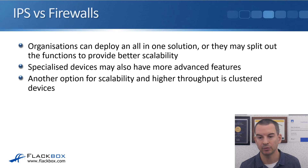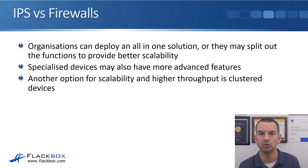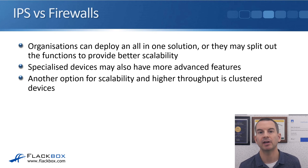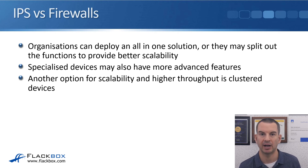Another option for scalability and higher throughput is clustered devices. An inline IPS can become a bottleneck if it doesn't support enough throughput for the traffic volume. A solution is to deploy multiple hardware devices and send traffic through them. If the devices support clustering, they act as a single solution for management and features, but because you have multiple devices, they support higher throughput and also provide redundancy in case one of them fails.